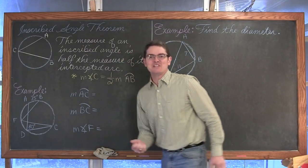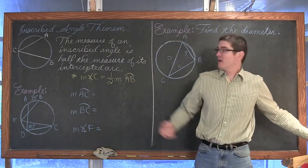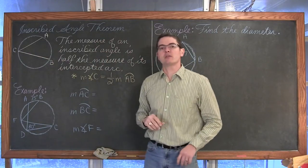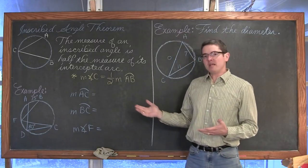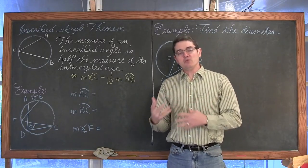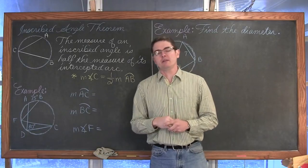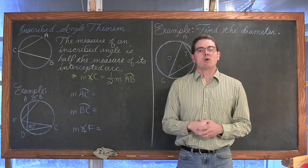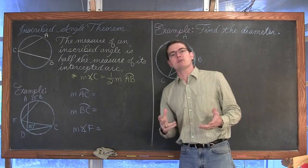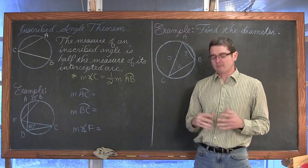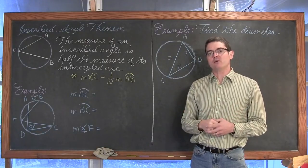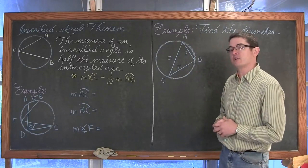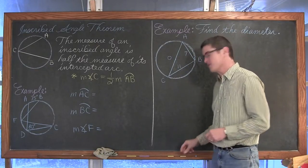BAM! Mr. Tarrou! In this video I'm going to define what an inscribed angle is in a circle and relate the measure of this inscribed angle to the measure of the arc. I'm going to work through a few examples and then use those examples to lead us into some corollaries dealing with inscribed angles and how they relate to each other in the circle. There will be five examples total along with definitions and corollaries to help you do your homework.